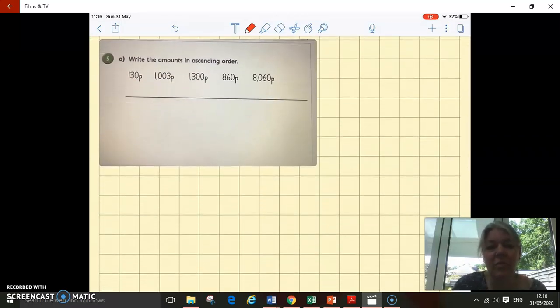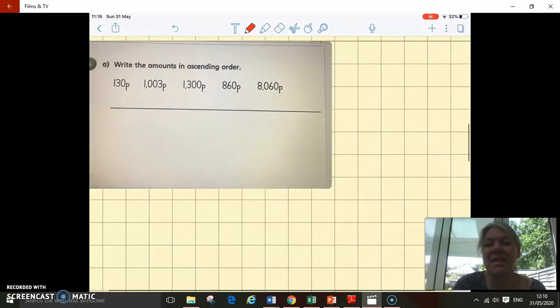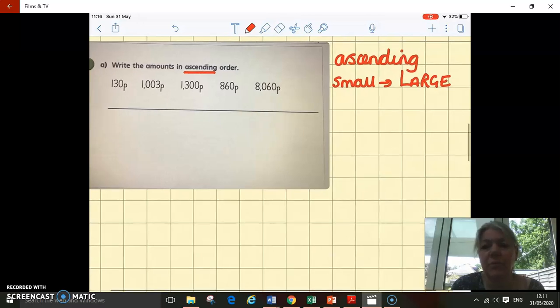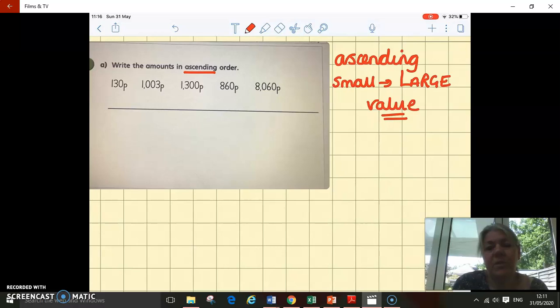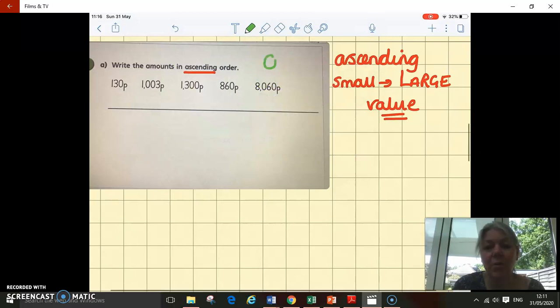Moving on to the next type of question: writing amounts in ascending or descending order. This one is asking us to do it in ascending order. If you remember, ascending order means from the smallest amount to the largest amount. And it's the value, so it's not how many digits, it's the value.